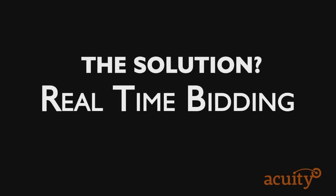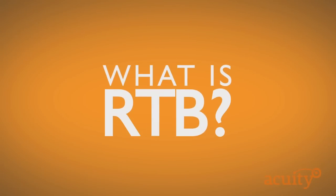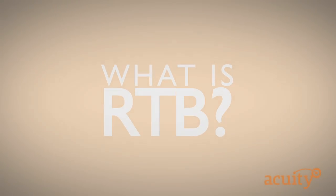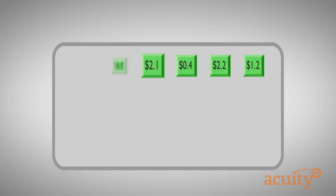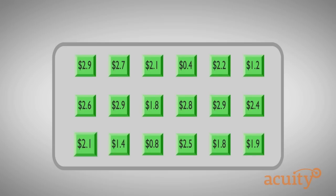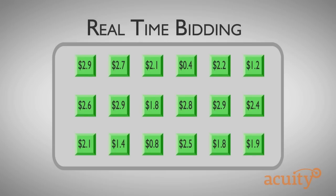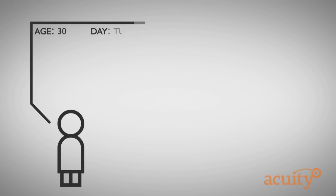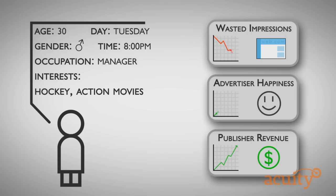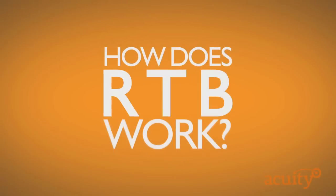Real-time bidding. RTB allows display inventory to be purchased by the individual impression through a bidding system that unfolds in the milliseconds before a web page is loaded by a consumer. The targeting and cost-efficiency opportunities presented by RTB are making it a revolutionary force in the online advertising landscape.